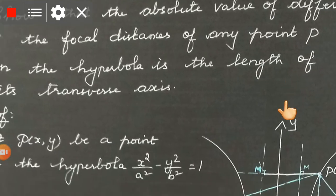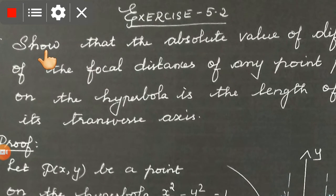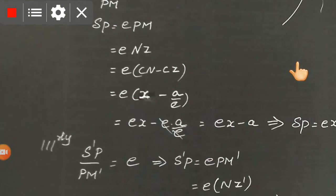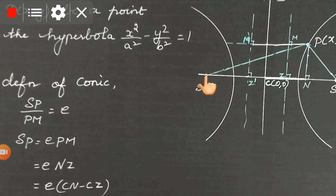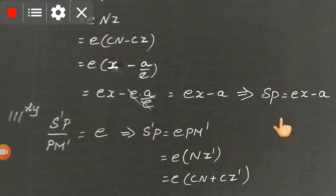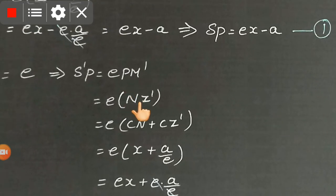The question asks for the absolute value of the difference of the focal distances — plural — so we need both SP and S'P. We have found SP. Now for the other focus S', we find S'P. By the definition of a conic, S'P divided by PM' equals e, so S'P equals e times PM'. PM' equals NZ'.